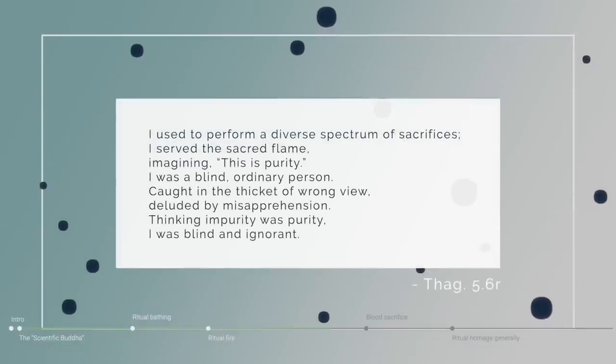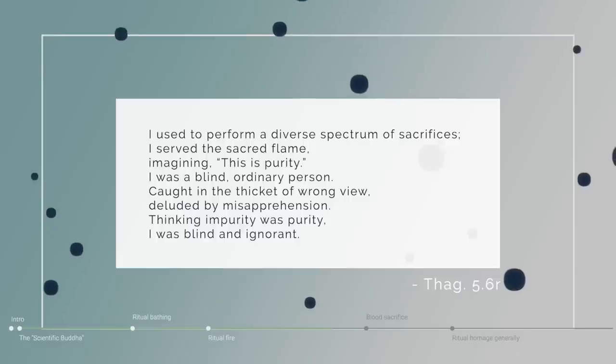We see a similar kind of point made in an early poem by the monastic or the monk Nadi Kasapa. This is one of the poems that's preserved in a book of early Buddhist poems by some of the first Buddhist monks. And in that poem, Nadi Kasapa says this, he says, I used to perform a diverse spectrum of sacrifices. I served the sacred flame, imagining this is purity. I was a blind, ordinary person, caught in the thicket of wrong view, deluded by misapprehension. Thinking impurity was purity, I was blind and ignorant.